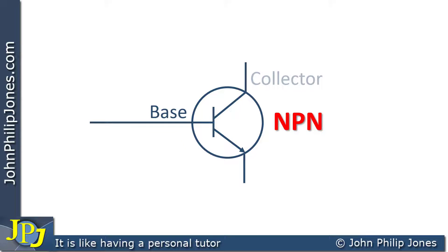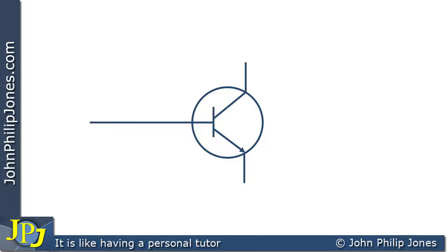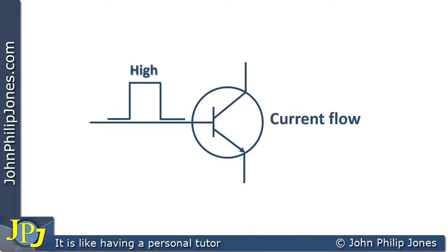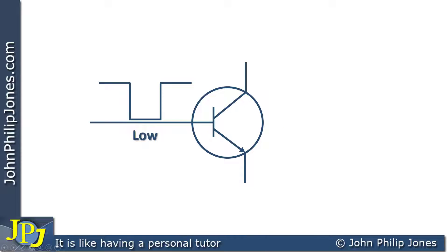The transistor will have a base, a collector, and an emitter. If you apply a high pulse to the base of the transistor, current will flow from the collector through to the emitter, and the transistor is said to be on. If you apply a low pulse to the base of the transistor, no current will flow, and the transistor is said to be off.